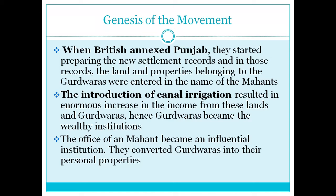After the annexation of Punjab by the British, the board of administration introduced canal irrigation. When canal irrigation was introduced, there was an enormous increase in the income from these lands and Gurdwaras. Hence, Gurdwaras became wealthy institutions, and the office of Mahant also became one of influential power. What they started doing was converting the Gurdwaras into their personal properties.